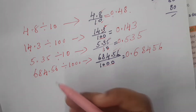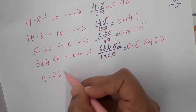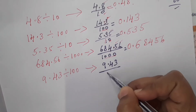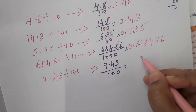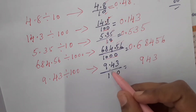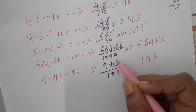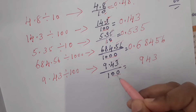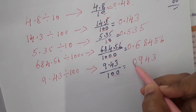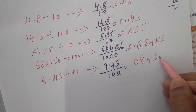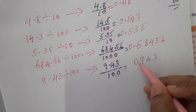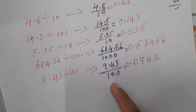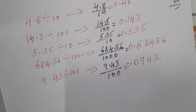9.43 divided by 100. Write the numerator 943 — ignoring the decimal point. After the decimal point there are 2 numbers, and divisor 100 has 2 zeros. Total: 1, 2, 3, 4 — but our numerator only has 3 digits. We need 4 digits, so add a leading zero in front. The answer is 0.0943. Note: we cannot add zeros after the number because that changes its value; we can only add zeros in front.